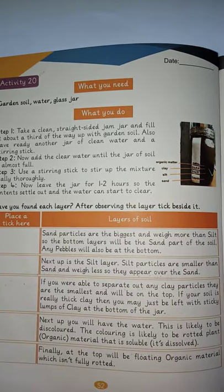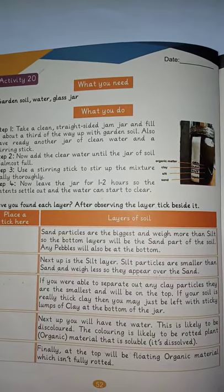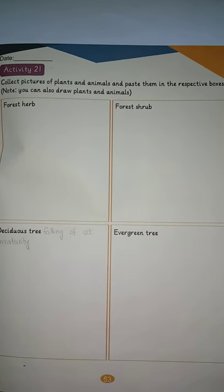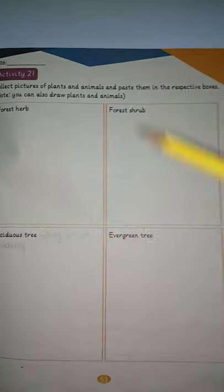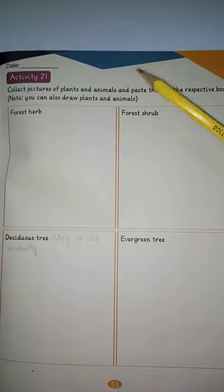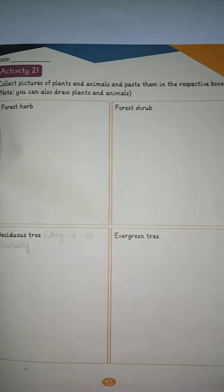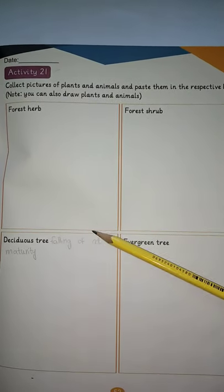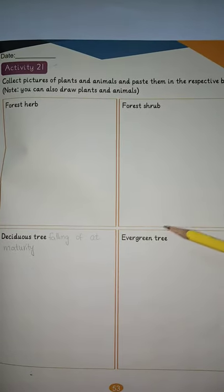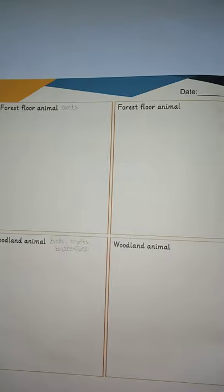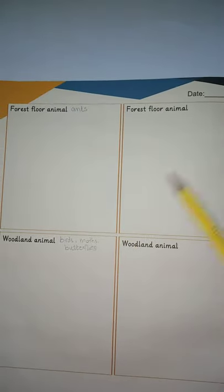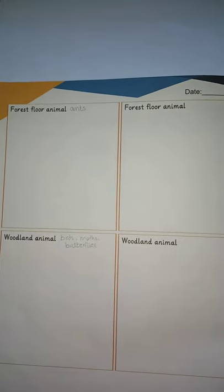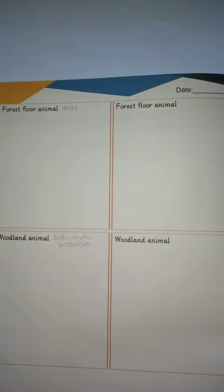Activity number 20 will be done in school as it is a teamwork activity, so skip it for now. Activity number 21 is to collect and paste pictures of plants and animals in the respective boxes — you can also draw them. Categories include forest herbs, forest shrubs, trees that shed leaves at maturity, and evergreen trees. Also paste or draw pictures of forest floor animals and woodland animals like birds, moths, and butterflies.